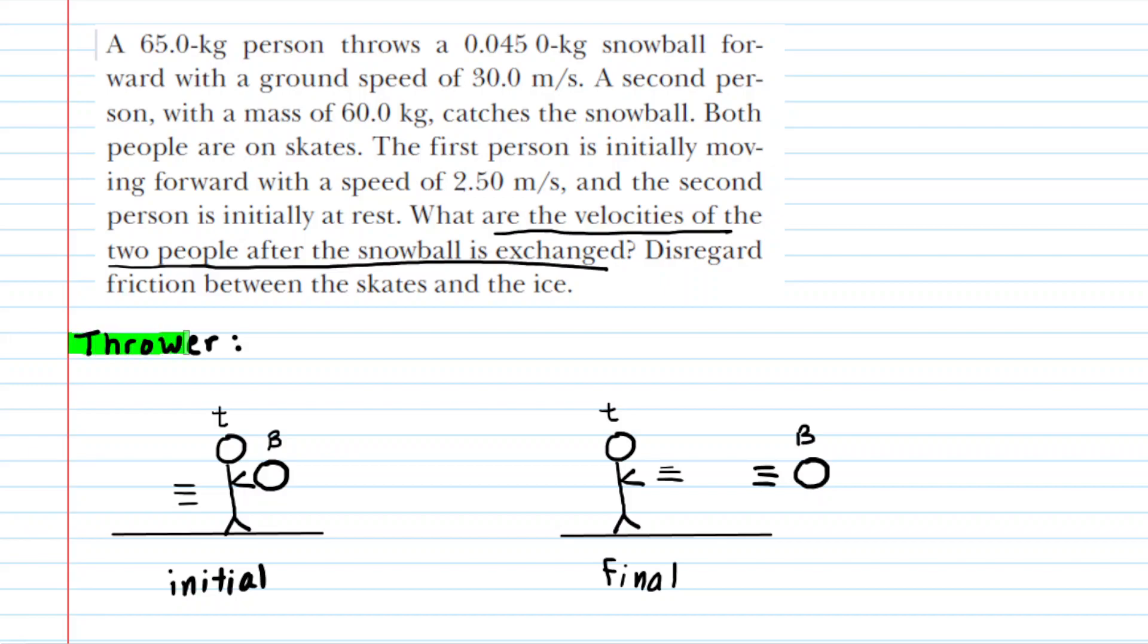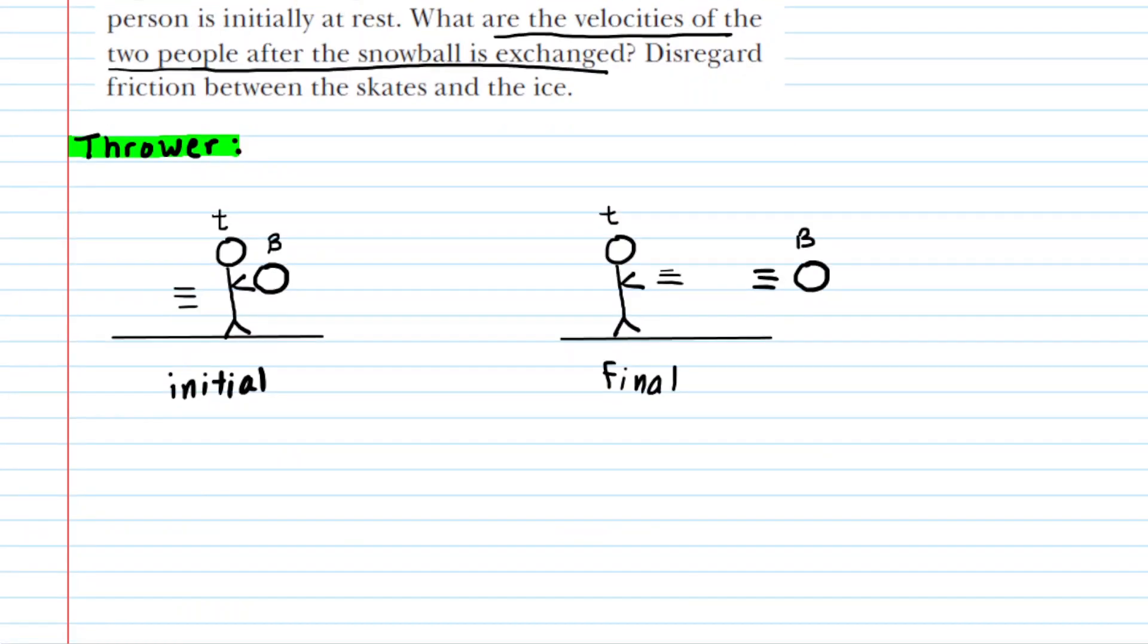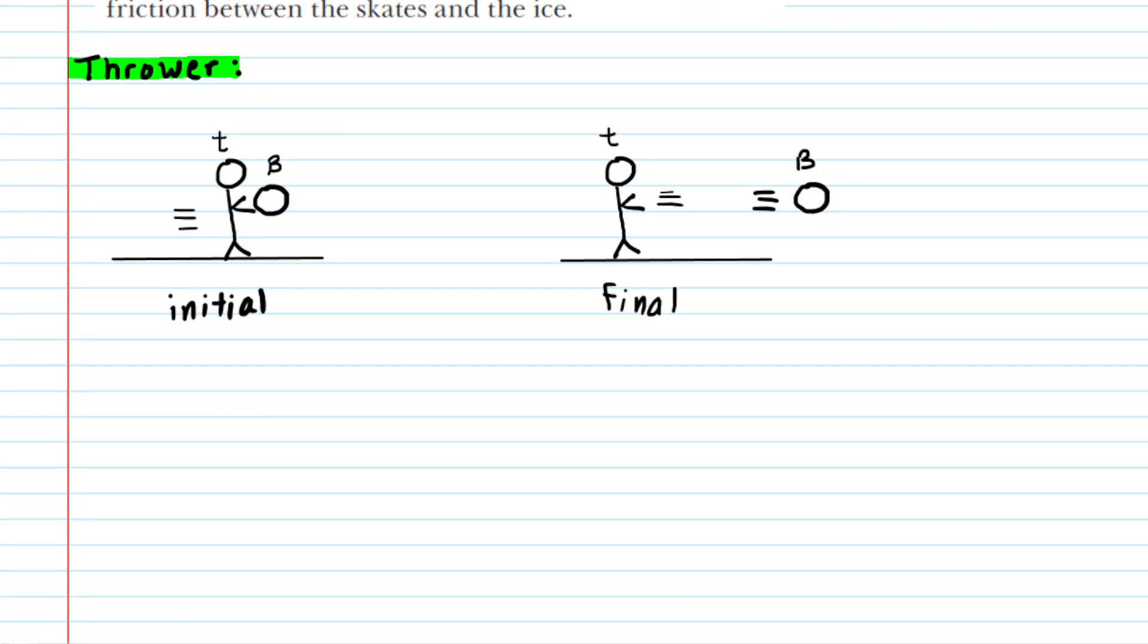For example, we're going to focus our attention first on the thrower. Initially the thrower is holding onto the snowball and she's gliding to the right, and then she throws the snowball and our job is to figure out what her velocity is after she throws the snowball.